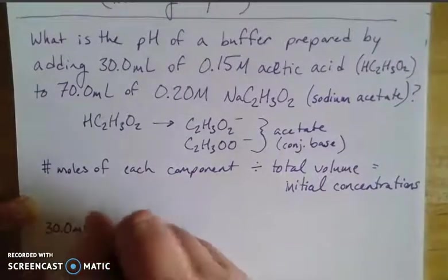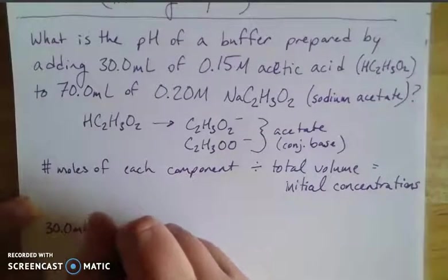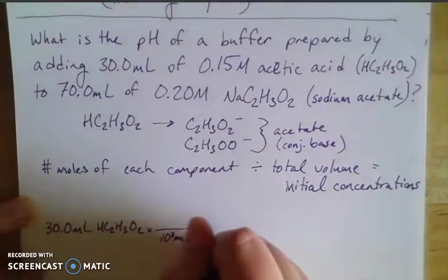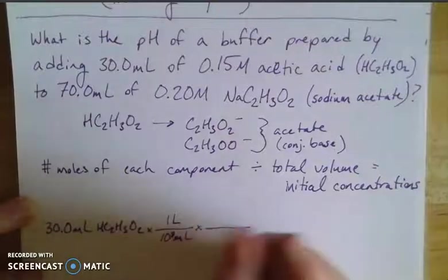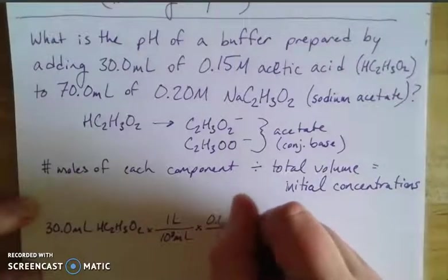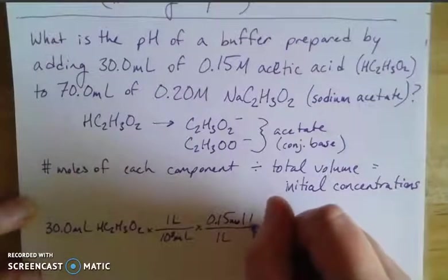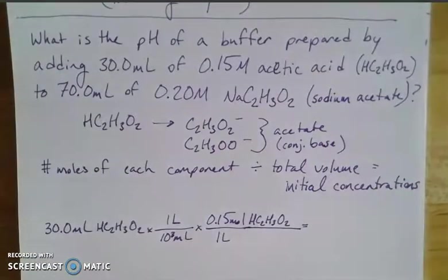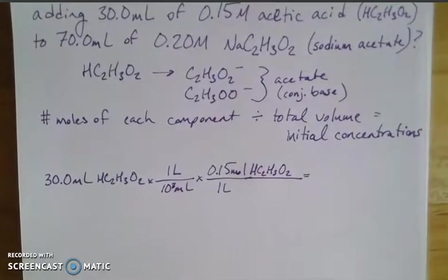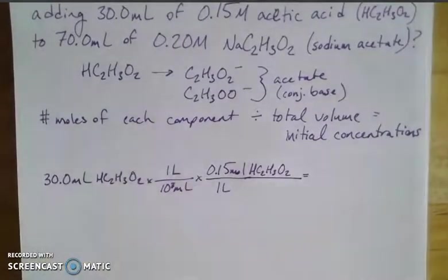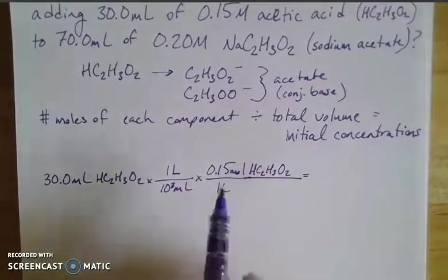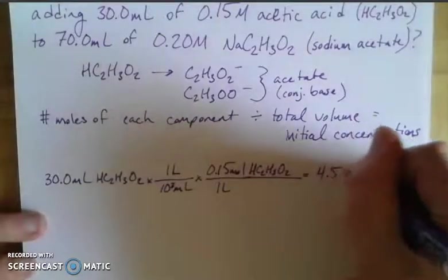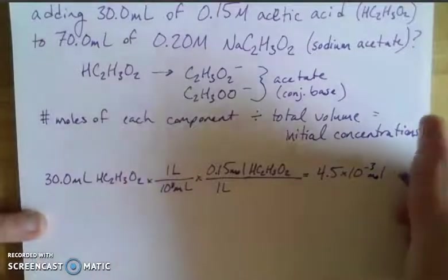So here's our 30 mL. Because we love ourselves some dimensional analysis. HC2H3O2. We're going to go from milliliters to liters. And then using the concentration, we can use that as a conversion factor as well. That gives me the number of moles per one liter. So when I run the numbers on this, I'm going to be limited to two significant figures for my concentration. I have three for my volume. But as we are working the problem here, we'll have to round to two. So that gives me 4.5 times 10 to the negative third moles of my acetic acid.